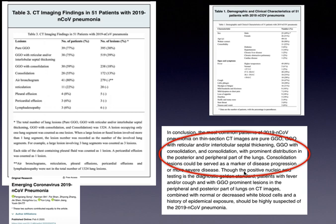This was the complete study summarizing various CT imaging features. Pure ground glass opacification is the most common finding at 77% of patients, ground glass opacities with reticular or interlobular septal thickening in 75%, followed by consolidation, air bronchograms, reticular opacities, pleural effusion, and a few cases showing lymphadenopathy.